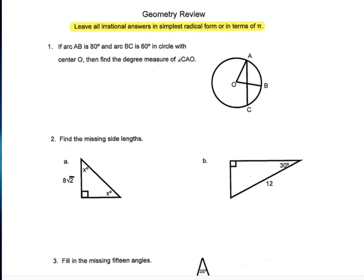Today we're going to look at some geometry topics to review before the ACT and MCA tests. Notice it says to leave all irrational answers in simplest radical form or in terms of pi. So we're not going to convert pi to a decimal, and we're not going to convert the square root of 7 to a decimal — we're just going to leave it like that.